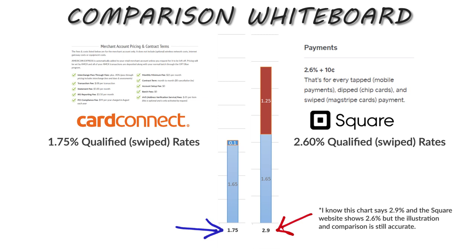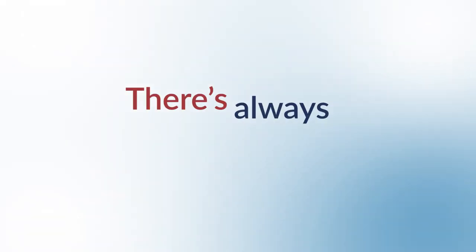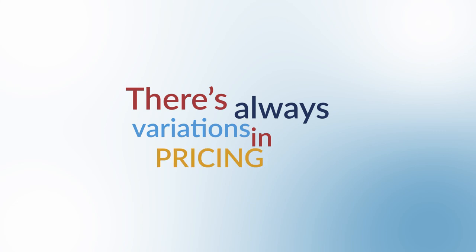A tier-based merchant account will average below 1.8% for those same swiped transactions. The trade-off is that Square doesn't have monthly platform fees, while merchant accounts typically have monthly fees ranging from $10 to $25 on average. Keep in mind this video is focused on rates — there's always more to any comparison than rate or price alone.